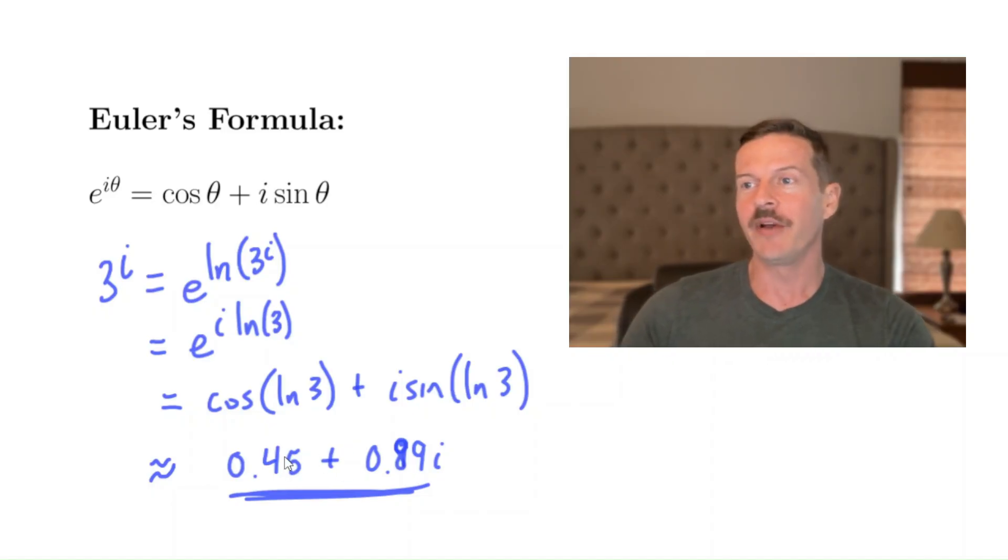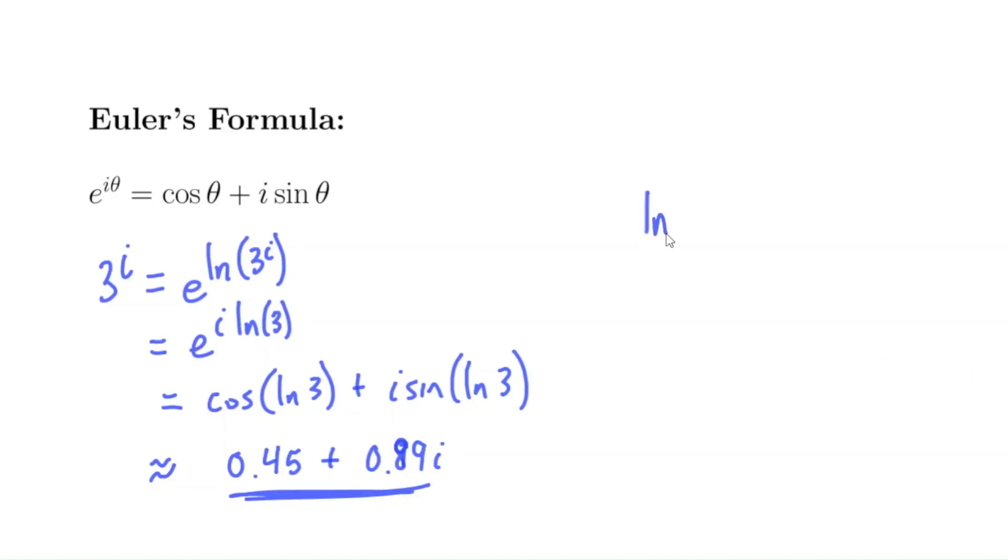Now, it turns out this point here, this number in the complex plane, is a point that's on the unit circle. In fact, natural log of three is about 1.1. So it's 1.0986 and so on. And we can think of that as being an angle in radians, because that's what we're inputting into the cosine and sine functions. Now, in terms of degrees, this is about 62.9 degrees, but that's the angle that we're putting in here.